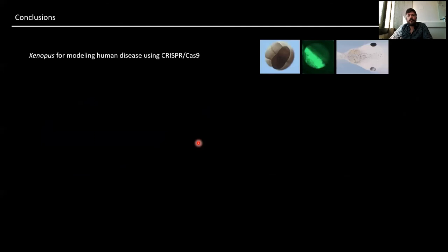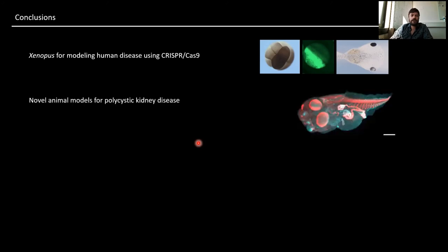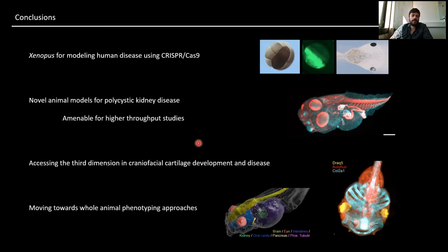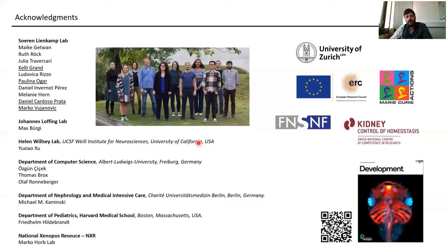In conclusion, Xenopus is useful for modeling human disease, especially after the CRISPR-Cas9 revolution. We have established novel animal models for polycystic kidney disease that are amenable for higher-throughput studies. We are now able to access the third dimension in craniofacial cartilage development and disease, and we are currently moving toward whole-animal phenotyping approaches. I would like to thank the people involved in the work, the funding sources, and you for your attention.